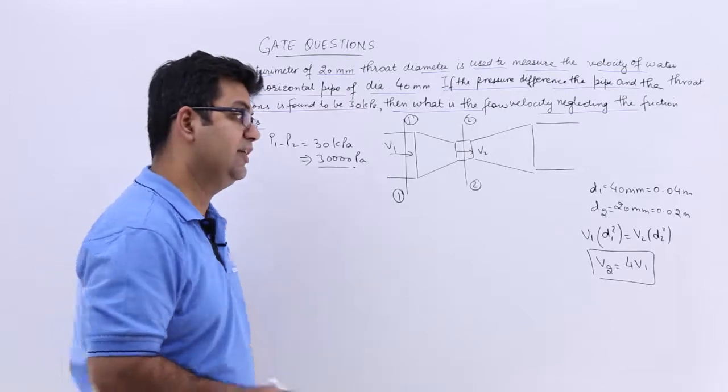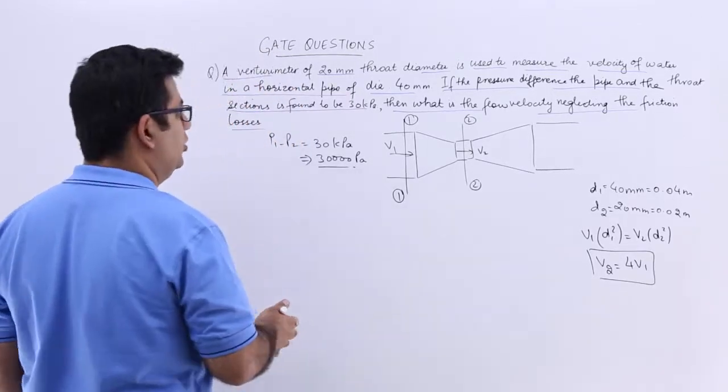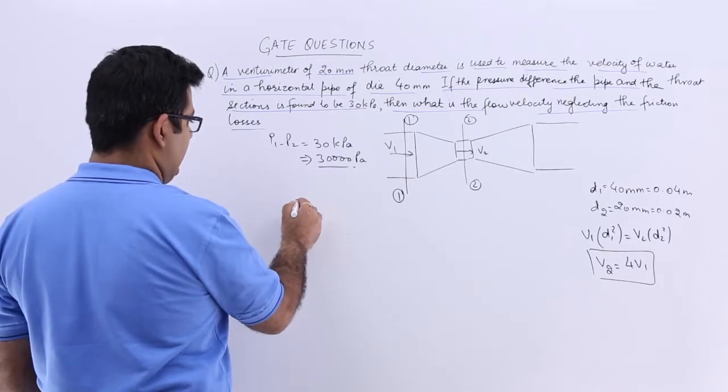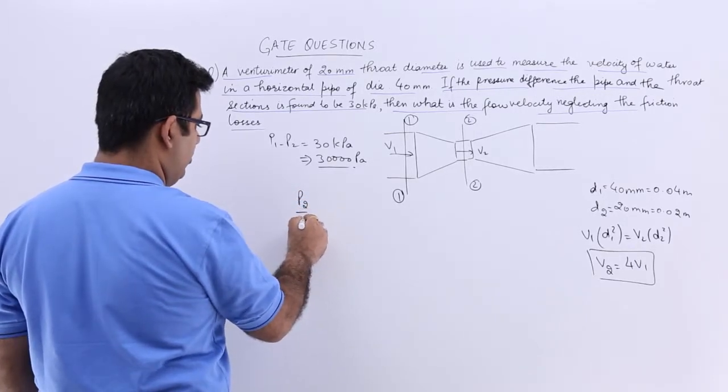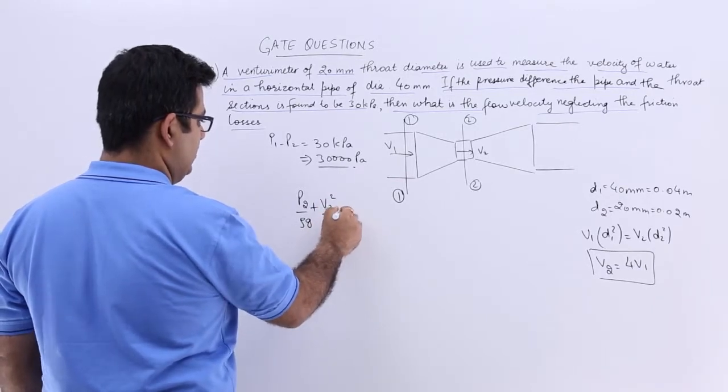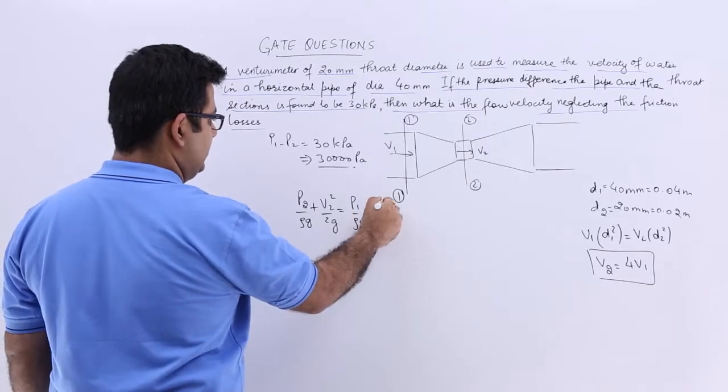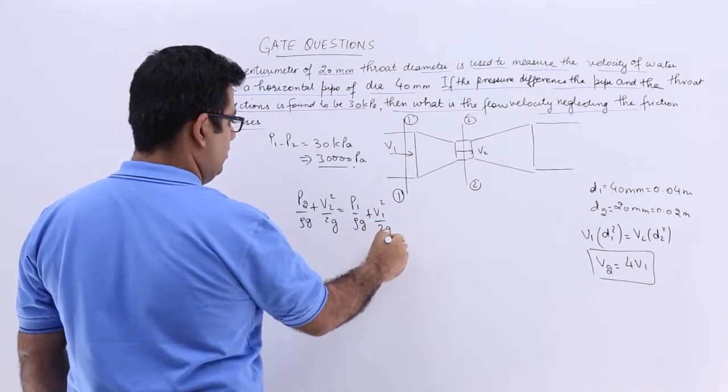Now why did we find that out? We will just have a look. So let us apply the Bernoulli's equation onto it. So you will have P2 upon rho g plus V2 squared upon 2g equals P1 upon rho g plus V1 squared upon 2g.